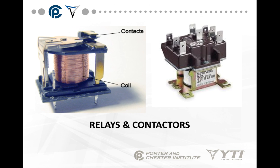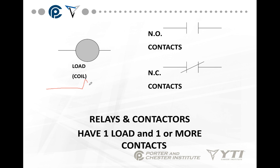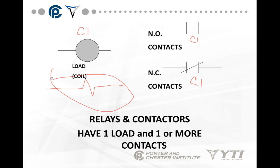Relays and contactors — we'll talk much more about these in the future, but a relay is basically an electronic switching device that has contacts and a coil. You'll see them on your circuit boards. The coil is a load, and it's drawn either as a circle or as a relay coil symbol. The key is: if the coil is labeled C1, the contacts controlled by it are also labeled C1 — that's how you tell they go together.